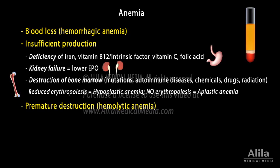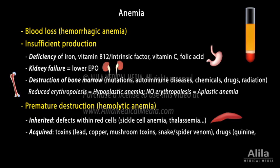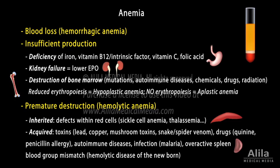Inappropriate destruction of red blood cells, also called hemolytic anemia, can be inherited or acquired. The inherited forms are usually due to defects within red cells themselves, such as abnormality in hemoglobin structure, while acquired hemolytic anemia can be caused by toxins, drugs, autoimmune diseases, infection, overactive spleen, or blood group mismatch.